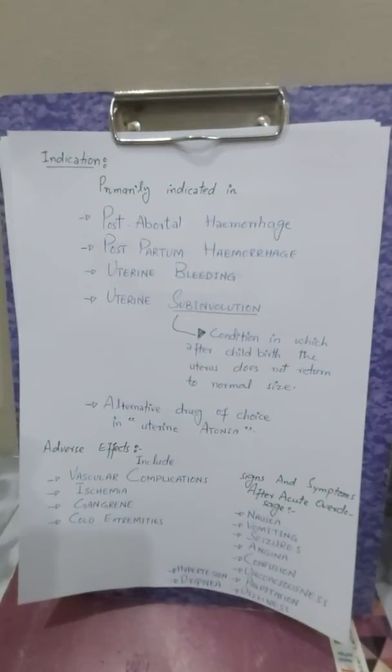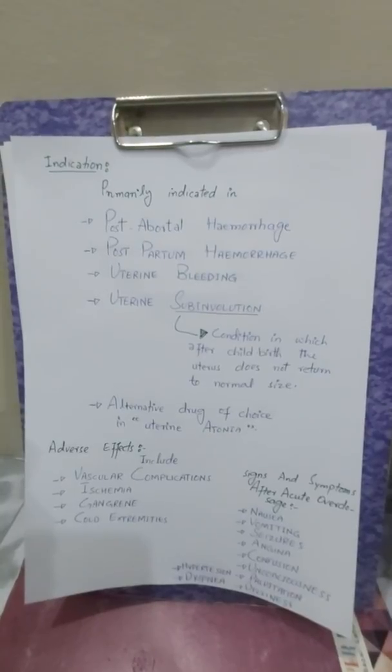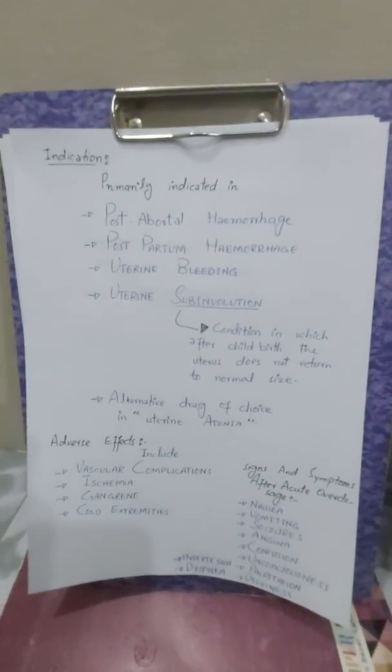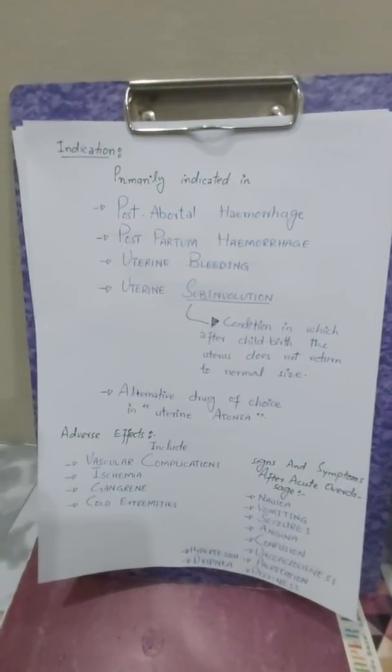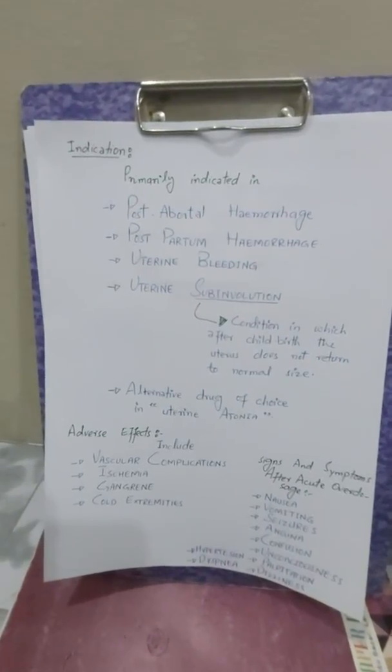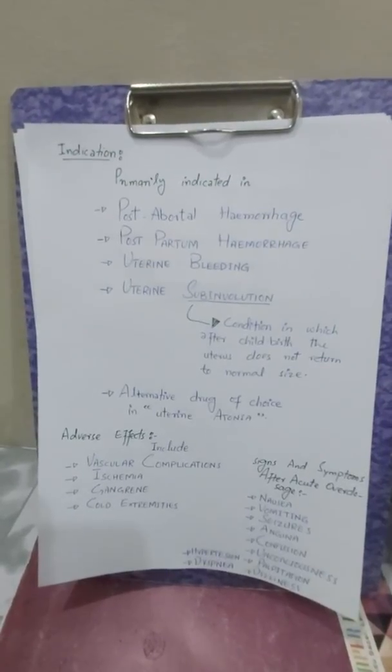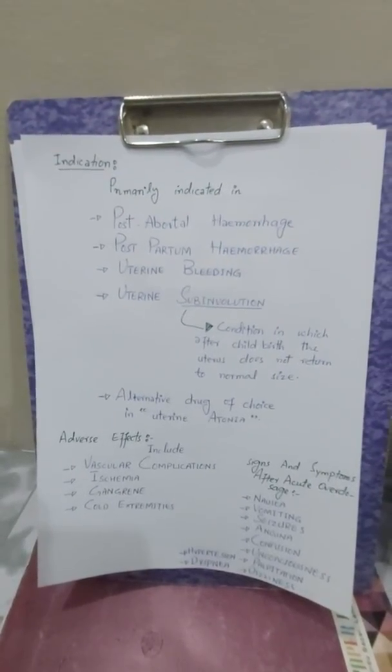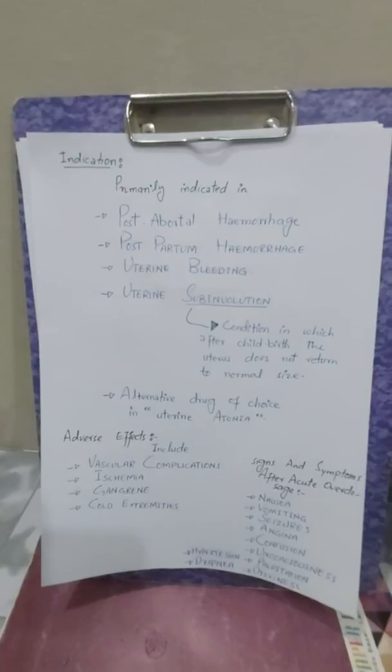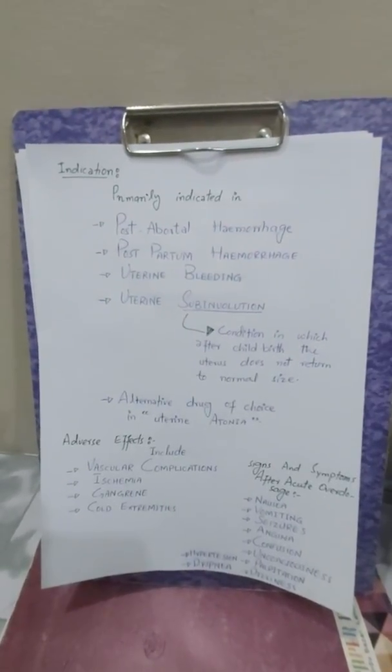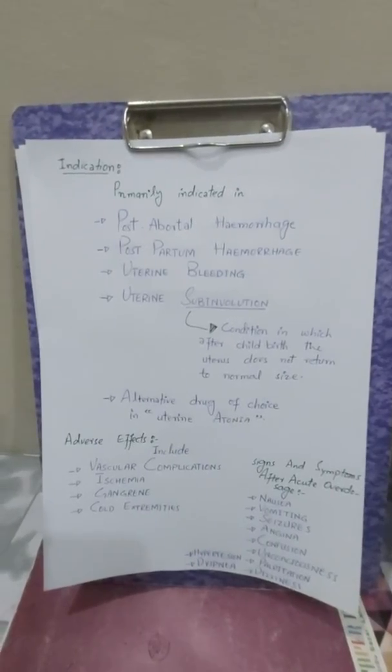Now the indications of this drug. It should be memorized with 2P and 3U. The 2Ps are post-abortal hemorrhage and postpartum hemorrhage. The 3Us are uterine bleeding and uterine subinvolution. Subinvolution is a condition in which after childbirth the uterus does not return to its normal size. Methylergometrine is an alternative drug of choice in uterine atonia.